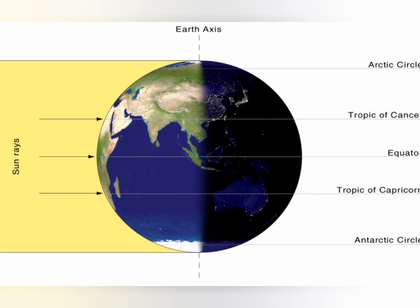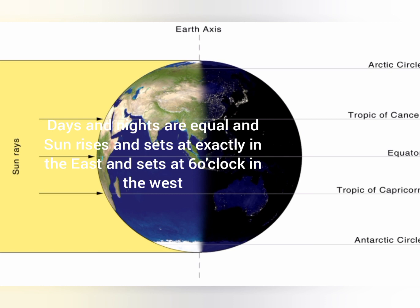The sun's rays directly fall at the equator during the equinoxes, so the heat is felt maximum at the equator and diminishes as we gradually move away towards the poles. On the equinoxes, the days and nights are equal all over the world, and everywhere the sun rises exactly in the east and sets in the west, approximately at six o'clock.